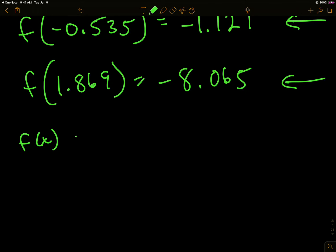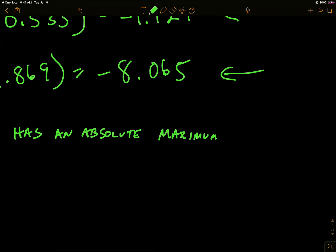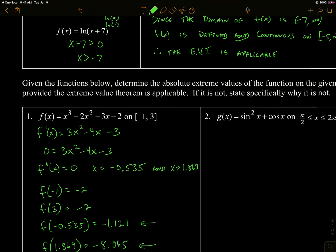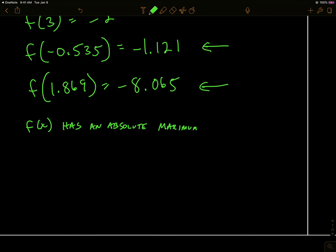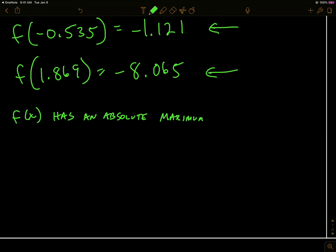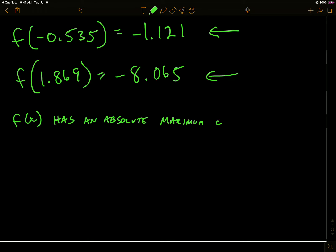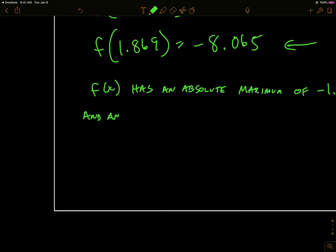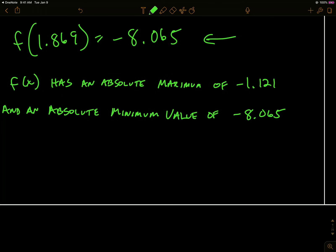Now we want to test for our extreme values. We always test the endpoints and then any possible extrema. We're testing the original function because we're finding where the original function has maximums and minimums. We get: negative two, negative two, negative 1.21, and negative 8.065. The biggest is the maximum and the smallest is the minimum. So f of x has an absolute maximum value of negative 1.121 and an absolute minimum value of negative 8.065 on the given interval.